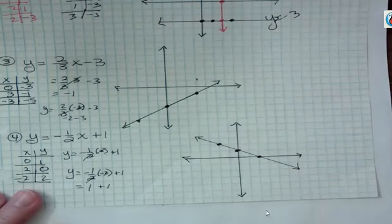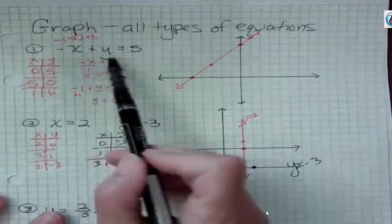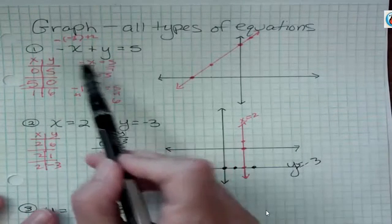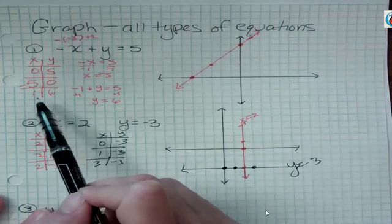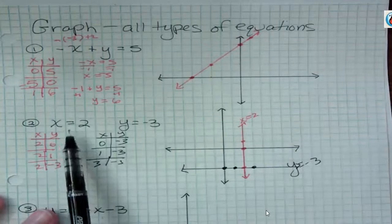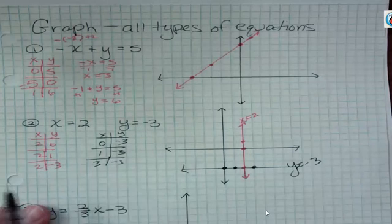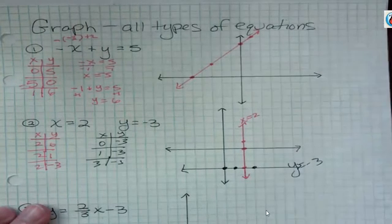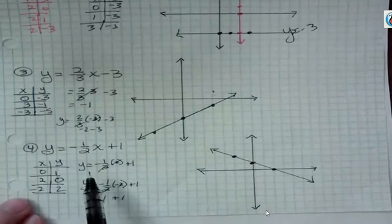So we saw 3 different types of graphing. We saw types of graphing where the x and y are together. And whenever I have that, I find the x-intercept and y-intercept, third point is a nice check. We saw the exceptions when we just have x equals some number or y equals some number. And those gives us horizontal and vertical lines, depending on which one you have. And then we have the slope-intercept form of graphing.